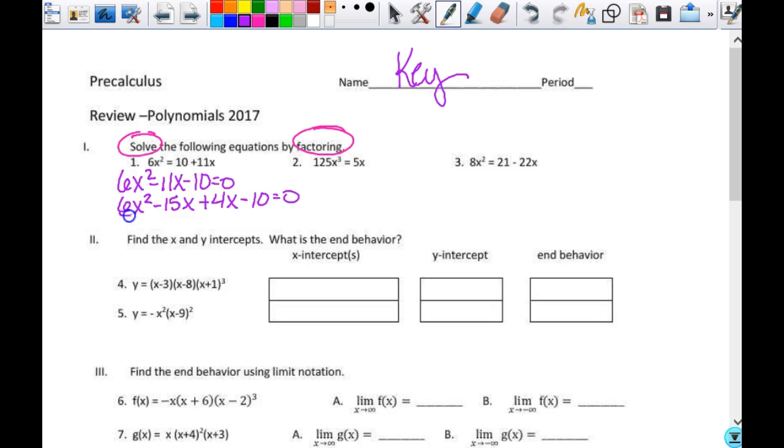So of these first two here, I'm going to factor out a 3x. That leaves me with 2x minus 5. Here I can factor out a 2. So plus 2, that leaves me with 2x minus 5. Those don't match. There's a problem.